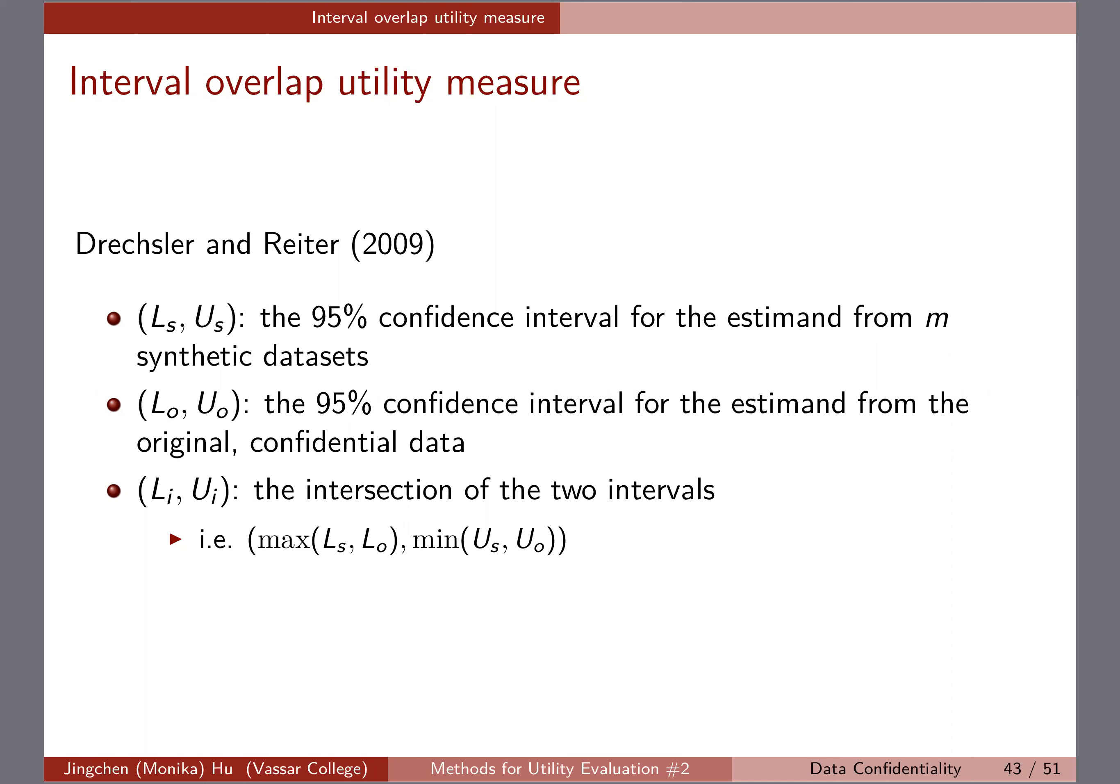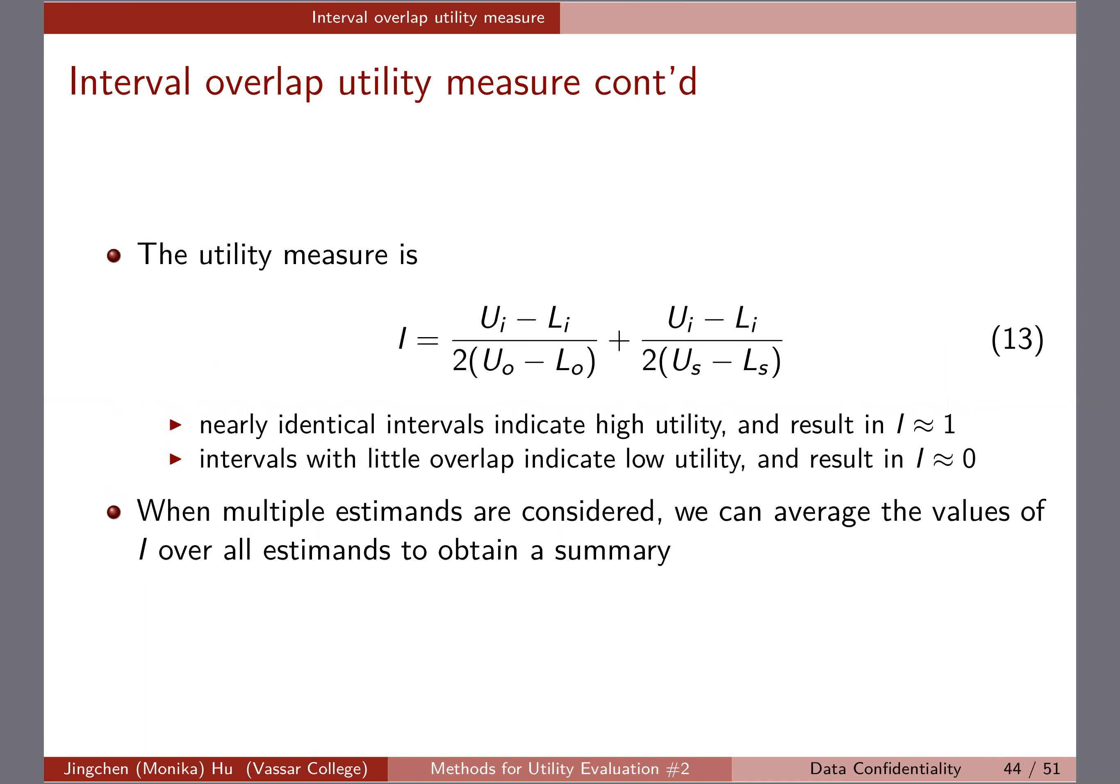We define L_i and U_i as the intersection of the two intervals. The lower one, L_i, will just be the max of L_s and L_o because it's the intersection, right? And then the upper bound will be the minimum between U_s and U_o. Overall intuitive.